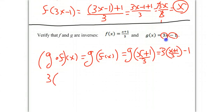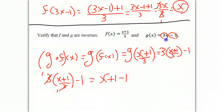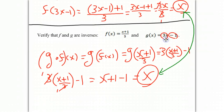We have 3 times x plus 1 over 3, minus 1. The 3s cancel out, giving us x plus 1 minus 1. And 1 minus 1 is 0, so we get x. In both compositions — f composed with g and g composed with f — we get x. That means both functions undid each other. We have now verified that these two functions are inverses of each other, and we are done.